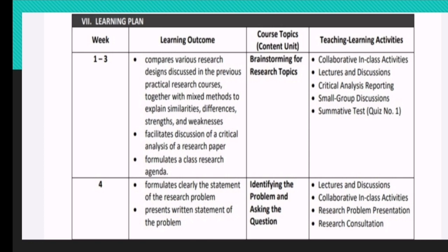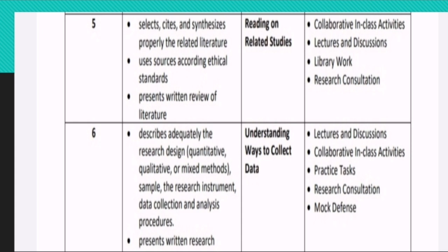For week 5, your learning outcome is that you must be able to select, cite, and synthesize properly the related literature for your research. You must also be able to use sources according to ethical standards and present your review of literature. These learning outcomes are under the umbrella of reading on related studies. Teaching and learning activities include collaborative in-class activities, lecture and discussions, library work — which can be done online — and research consultation.